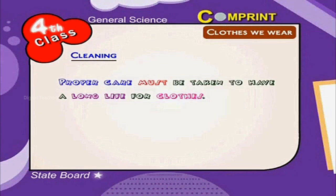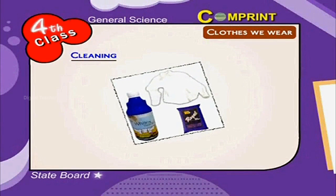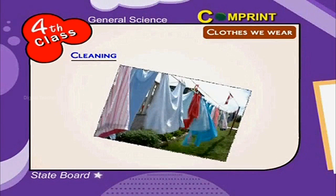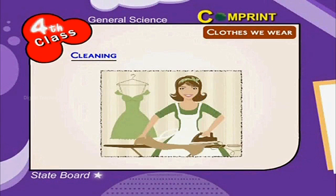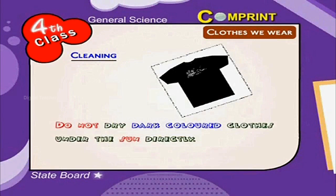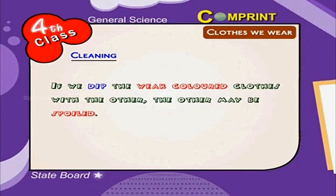Proper care must be taken to have a long life for clothes. For the brightness of white clothes, blue powder or blue liquid will be applied. After the application of starch, the clothes are to be dried under the sun directly and then ironed. Don't dry dark colored clothes under the sun directly. If we mix weak colored clothes with others, the other may be spoiled.